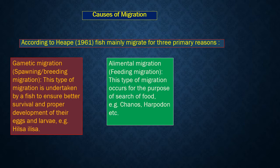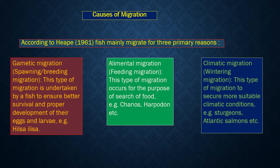Second, elemental or feeding migration, which occurs for the purpose of searching for food. For example, canoes, harpodon, etc. Third, climatic migration, which secures more suitable climatic conditions. For example, sturgeons, Atlantic salmon, etc.